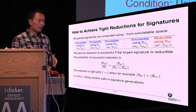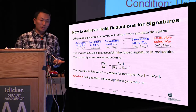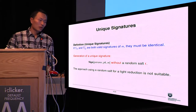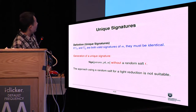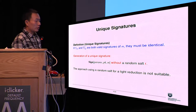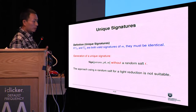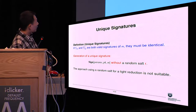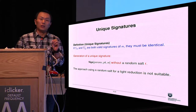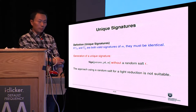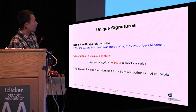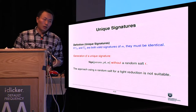However, not all signature schemes allow the use of a random nonce. For example, unique signatures. A unique signature is a very special digital signature scheme — roughly speaking, if sigma(M) and sigma(M') are both valid signatures of M, then they must be identical. So in the corresponding signature generation, we cannot use a random nonce because a random nonce will produce a distinct signature. Therefore, the approach using a random nonce for tighter reduction is not suitable for unique signatures.